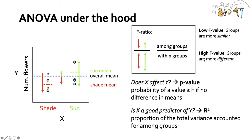We can use the F value to ask: what is the probability of getting this F value if there actually is no difference in means? We can calculate a P value, which represents the probability of a value greater than F if there's actually no difference in means. We can also look at R-squared to ask if X is a good predictor of Y — that's the proportion of total variance accounted for among groups — but R-squared is not part of the standard ANOVA output.